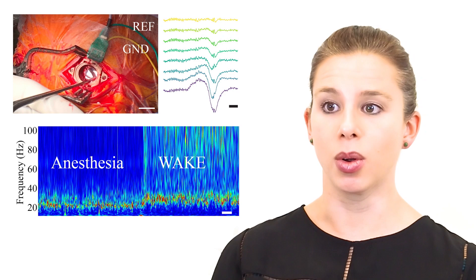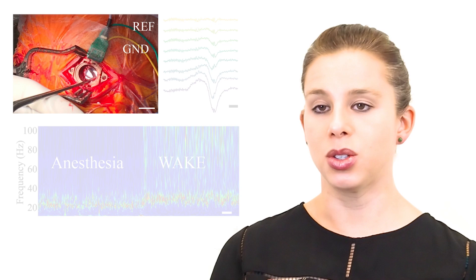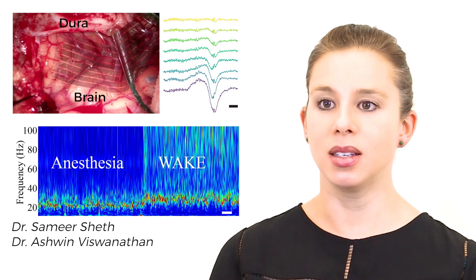As a proof of principle, we aimed to show that it was feasible to use electrocorticography recording in one of the most minimalistic neurosurgical settings, a burr hole, which is only 14 millimeters in diameter. Burr holes are used to insert electrodes during deep brain stimulation or stereo EEG procedures.